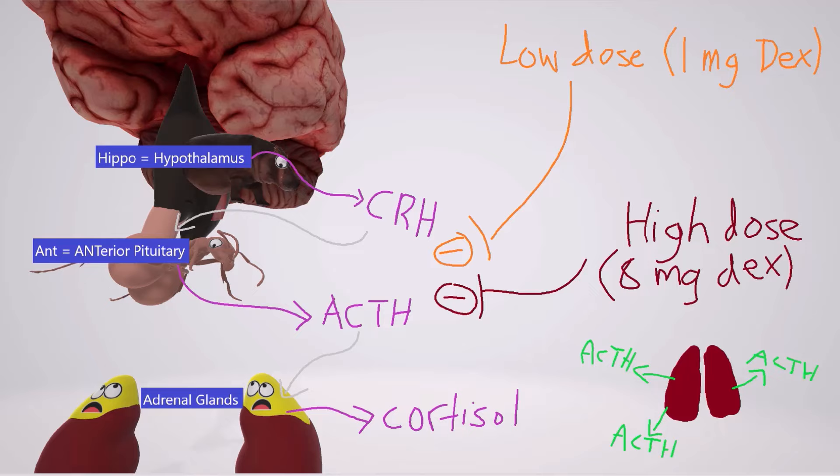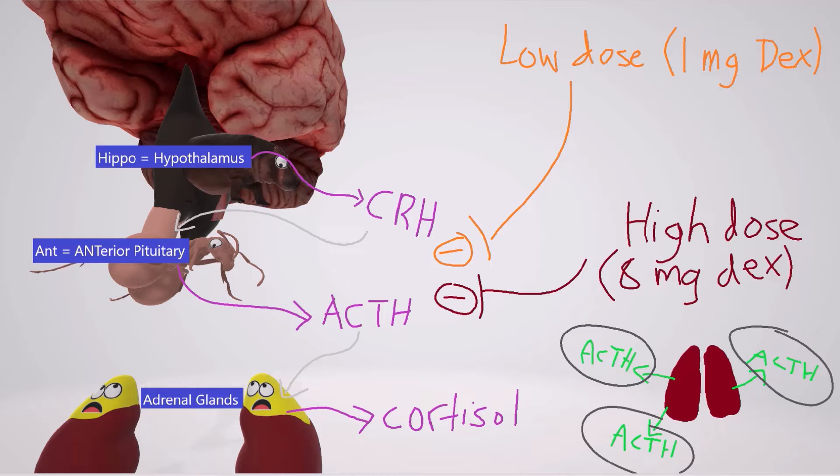So what we find is that although ACTH from the anterior pituitary is decreased, there are still elevated levels of ACTH in the body coming from the lungs. This ACTH continues to act on the adrenal glands, resulting in increased cortisol release. I hope you enjoyed this scene on the dexamethasone suppression test. Take care.